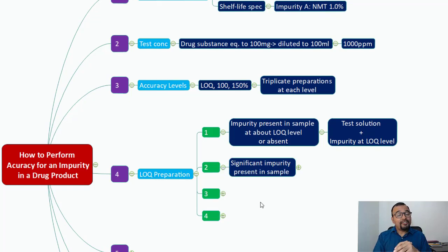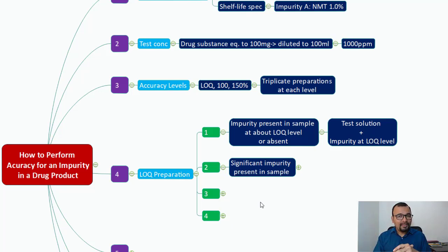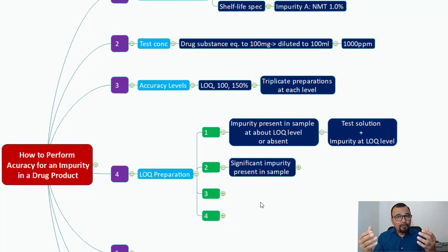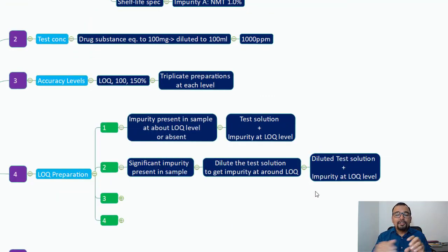In case your test solution contains a significant level of impurity A — let us say the limit is not more than 1% and your drug product contains 0.8% of impurity A — your accuracy level is at 0.05%, so it is not practically possible to differentiate the amount found from 0.8% to 0.05%. To make it practicable, you can dilute your test solution so that the concentration of impurity will be around the LOQ level, so you can easily calculate the amount recovered.